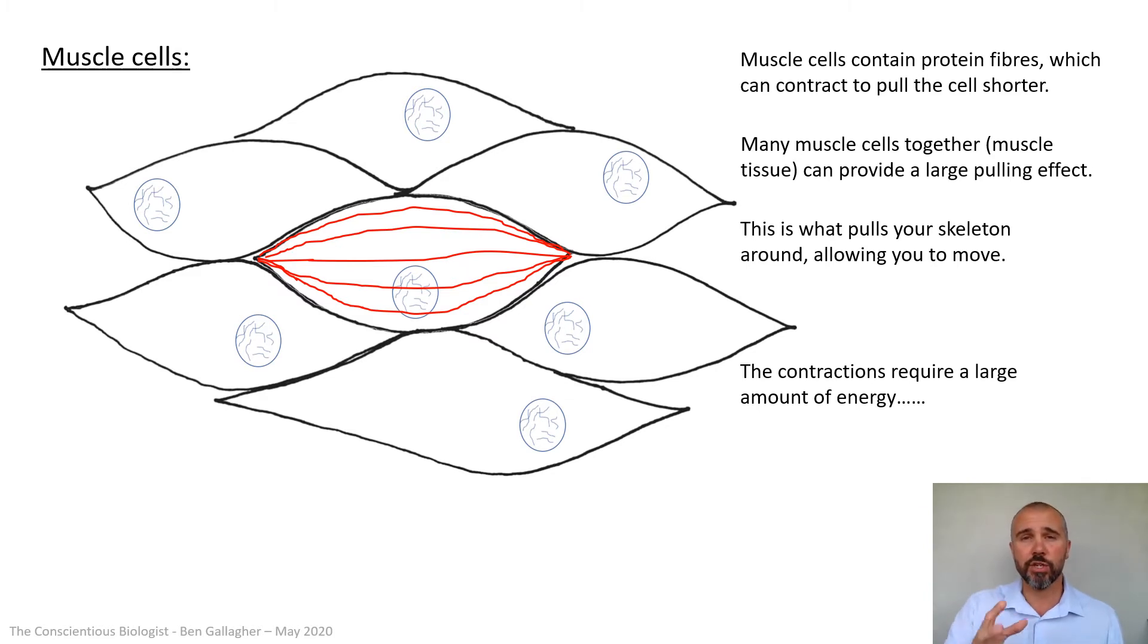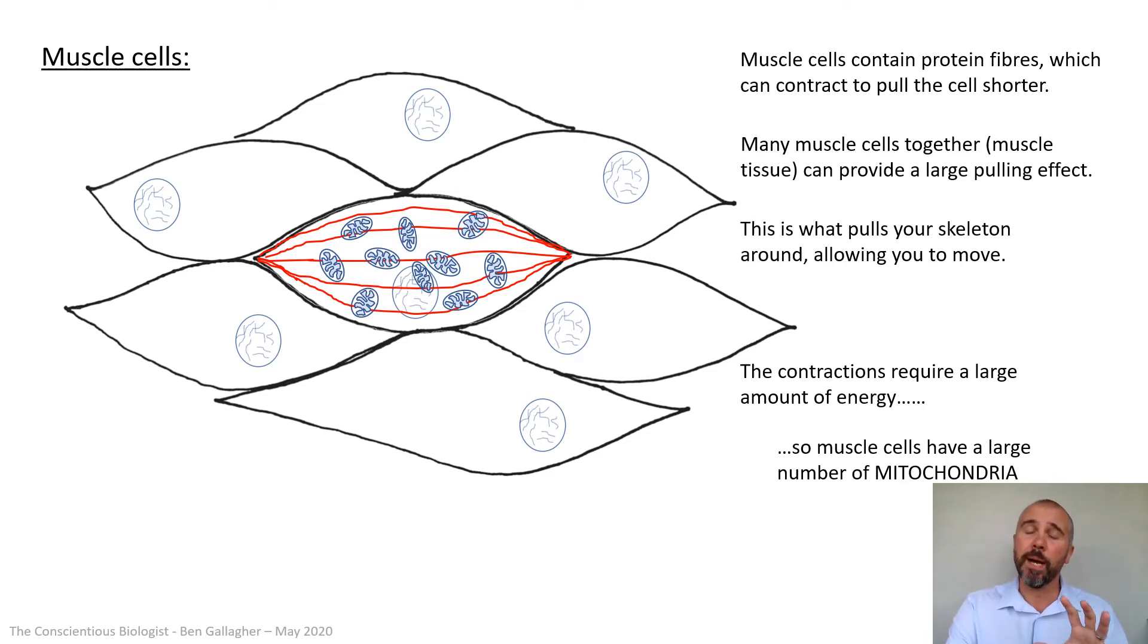But of course, those contractions, that pulling requires a huge amount of energy. So apply your knowledge from last lesson. What do you think we'd find loads of in muscle cells? What are going to do a reaction to provide that energy? Hopefully you've worked out that it's mitochondria. Muscle cells are absolutely packed with mitochondria because mitochondria do respiration to get the energy out of glucose. So that's a muscle cell. That's our second key cell.